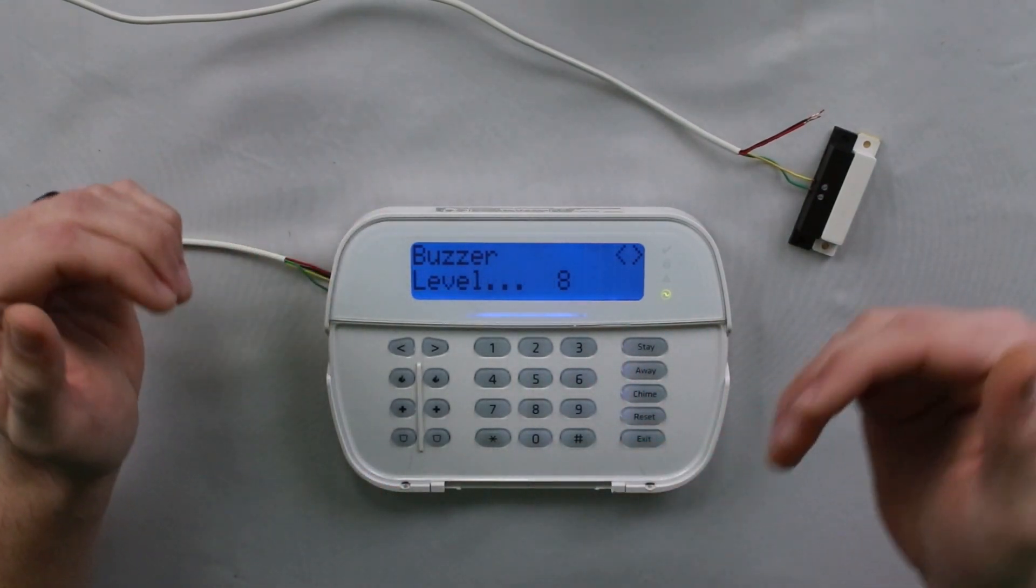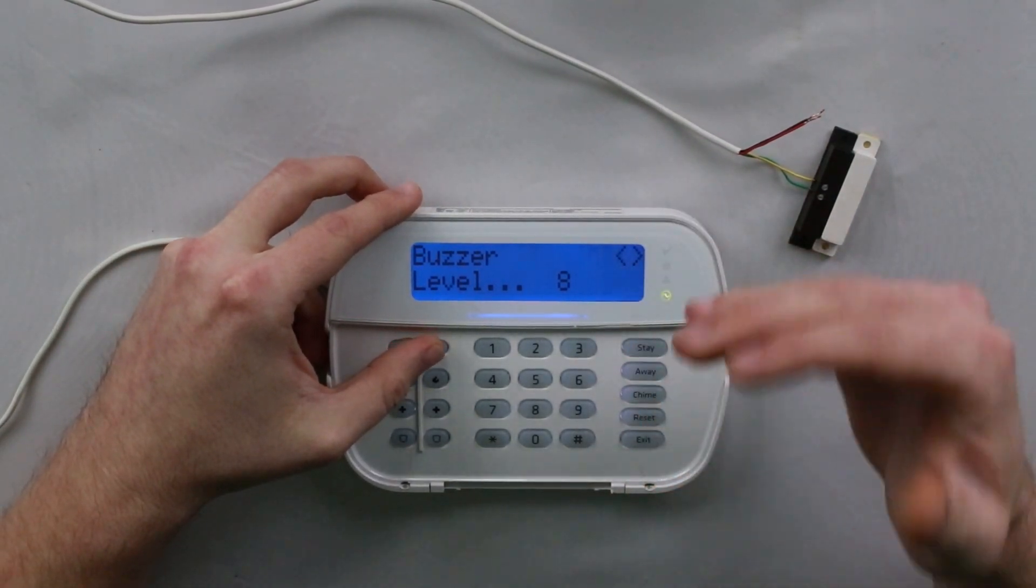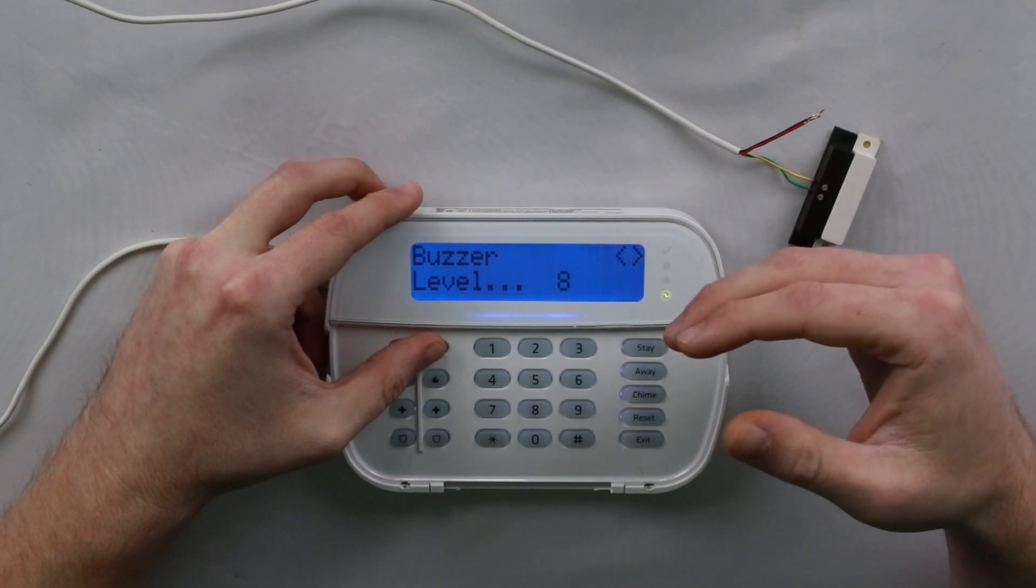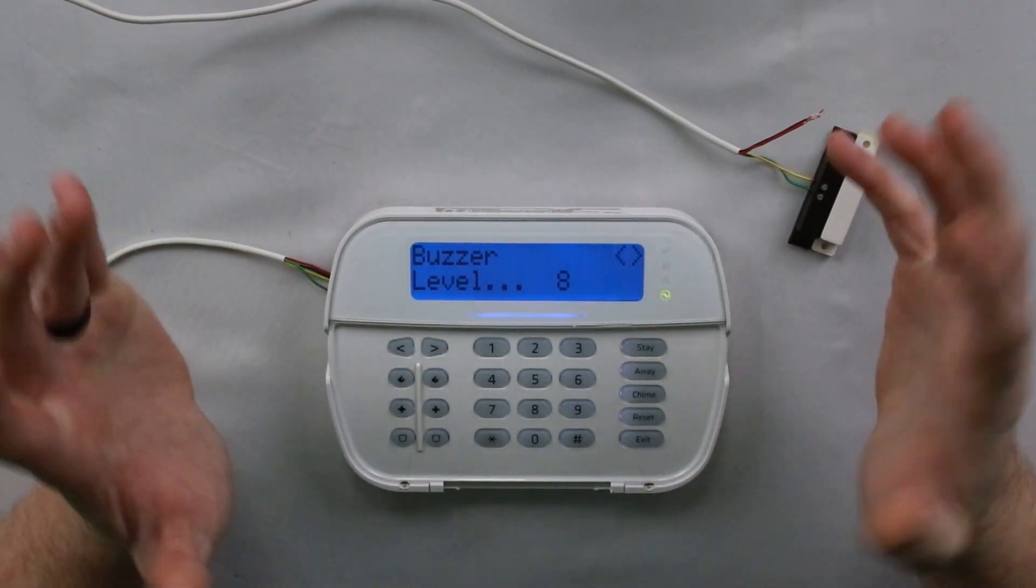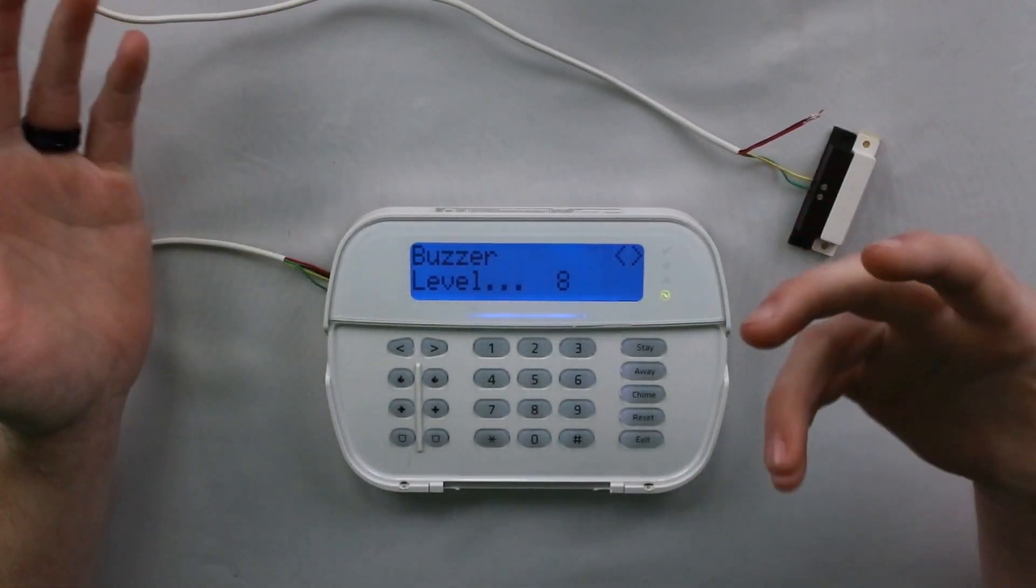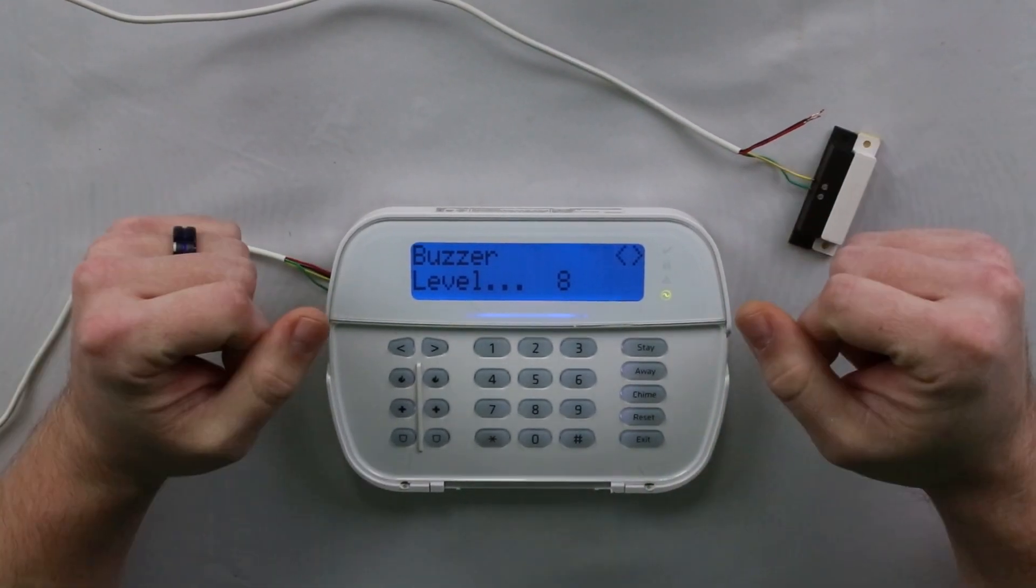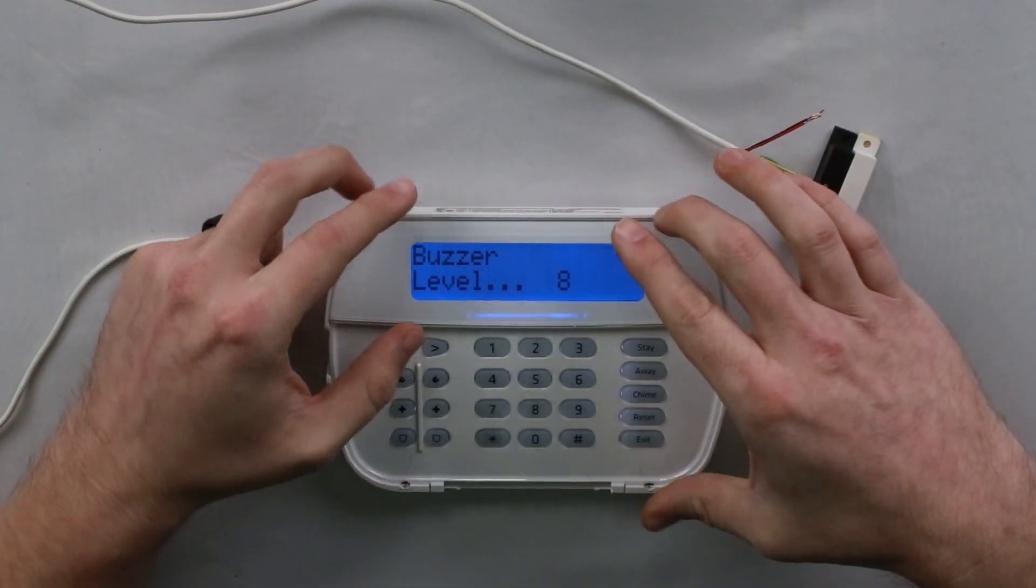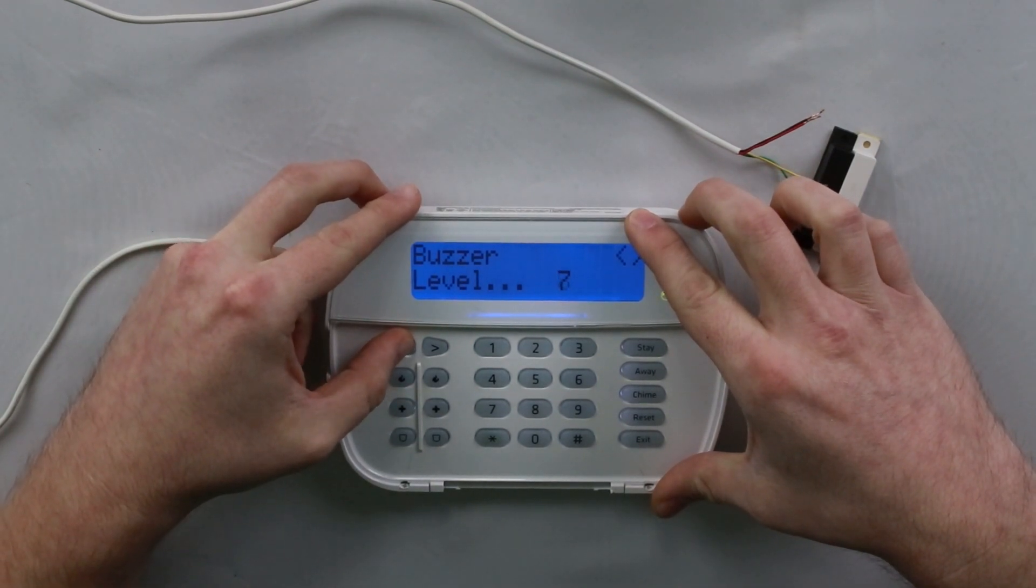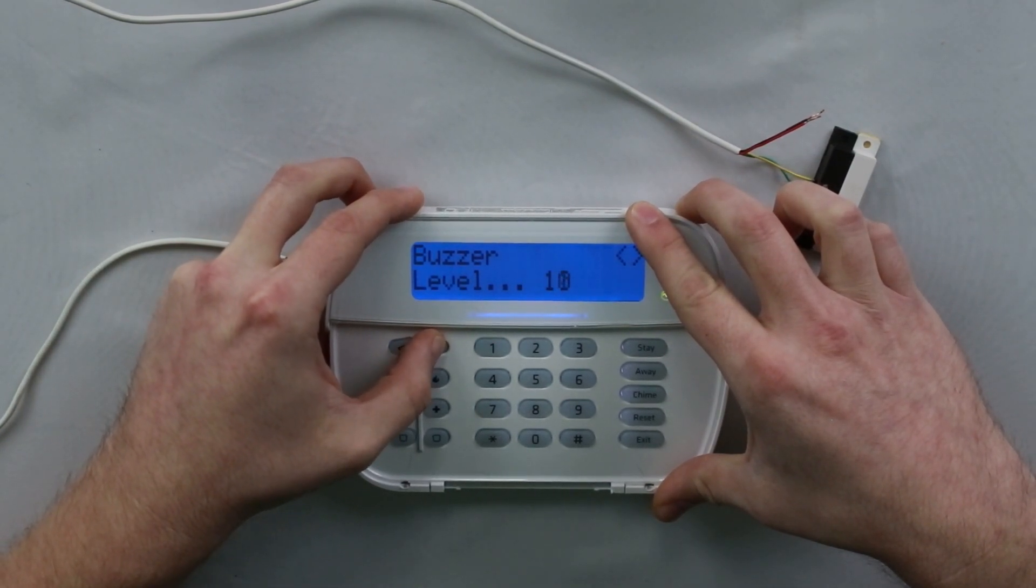Press star here, and it's going to tell you the current buzzer level. As I change this, you'll hear the pitch of the buzzer actually changing. To some people, it'll sound like the volume's changing as well, but that is because everybody has different levels of hearing loss. You might need a higher tone or you might need a lower tone depending on your current hearing conditions. If I go down, it is going to lower the pitch of each tone. And as I go up, it increases the pitch.